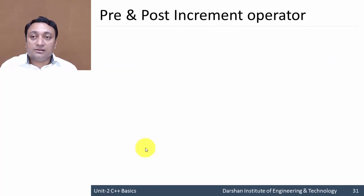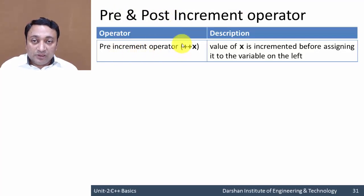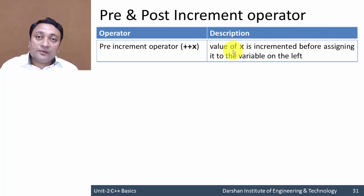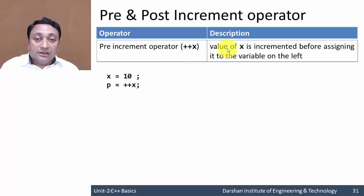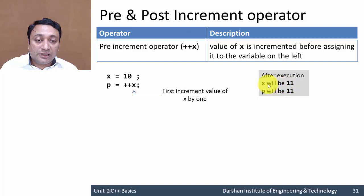Increment and decrement operators are further classified as pre and post. The same rules apply to both. In the pre-increment operator, the operator symbol is written before the identifier — that is the prefix form. The value of x is incremented before assigning it to the variable on its left. Here, x holds 10; it is incremented to 11 first, and then assigned to variable p. So after execution, both x and p will be 11.